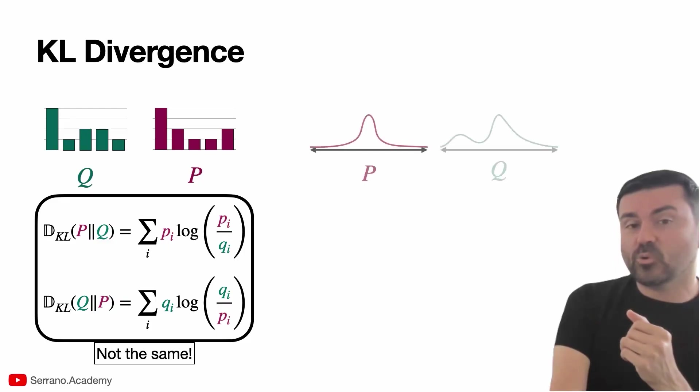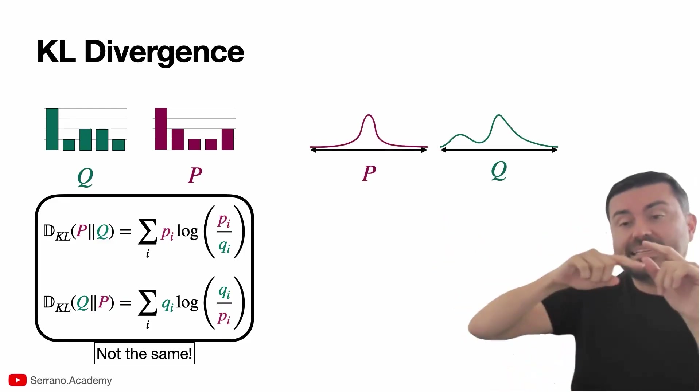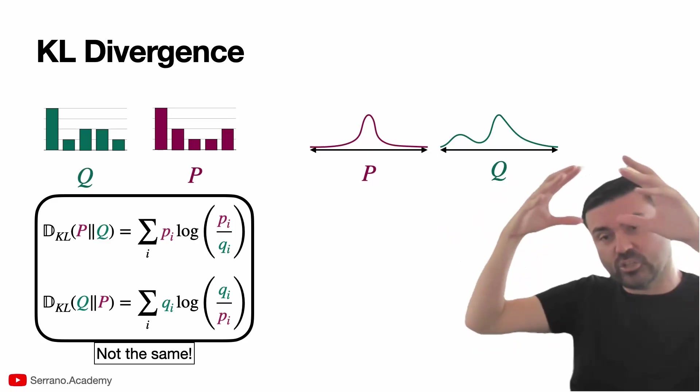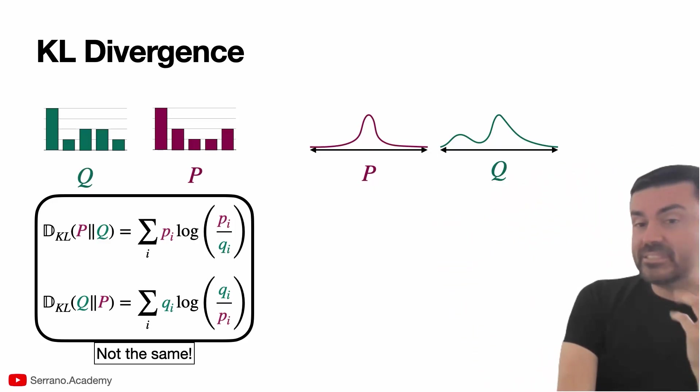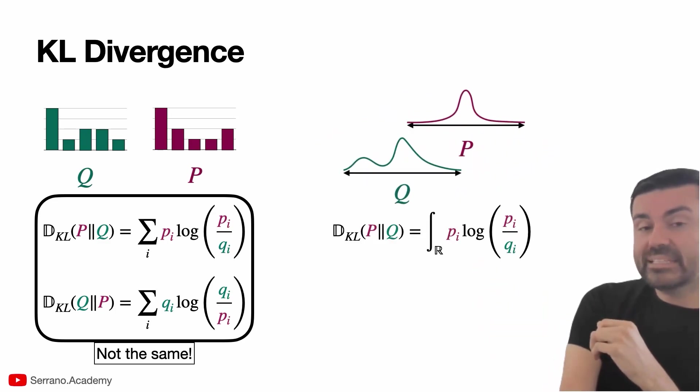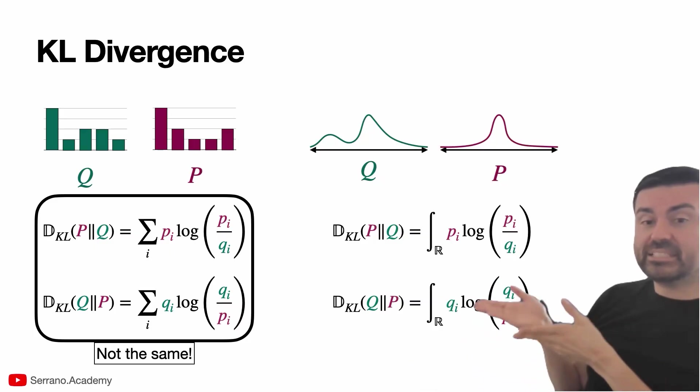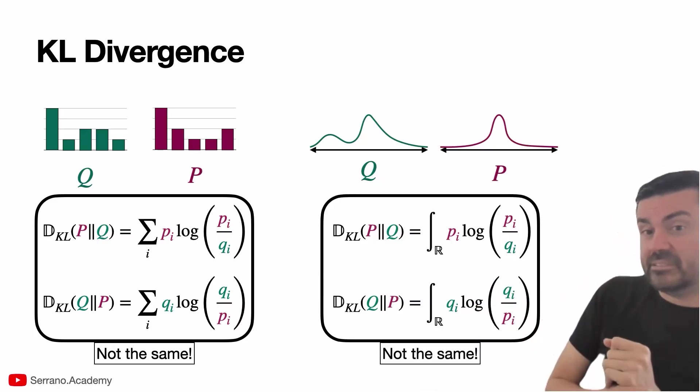The same thing happens for continuous distributions. So now I have an interval of values and a likelihood for each value, and the curve has an area of one underneath. And the formula for KL divergence is very similar, except instead of a summation, we have an integral. For P and Q it's this, and for Q and P it's this over here, which clearly is a different formula. And you can't really work it out to be the same. They're different formulas.